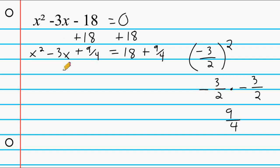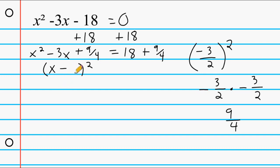What we have on the left is now a perfect square trinomial, meaning we can factor it into a binomial squared. Write a set of parentheses for the binomial — notice the middle term is negative, so write a minus sign. The first position is x because x × x = x². For the second position, take b and divide by 2: 3 ÷ 2 = 3/2. So we get (x − 3/2)², which is the same as this trinomial.